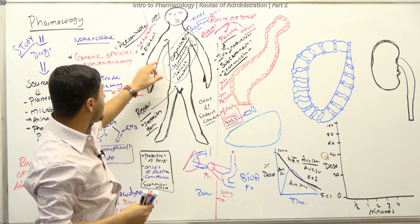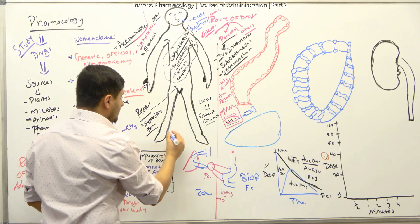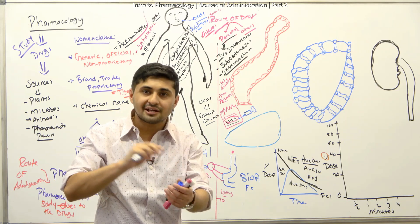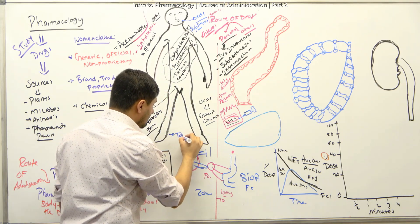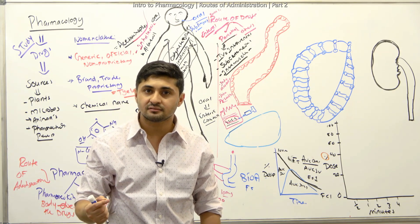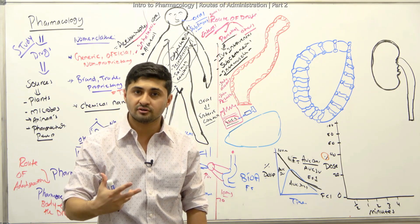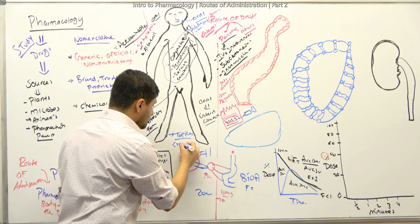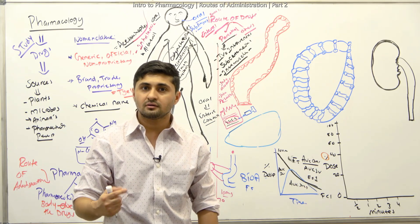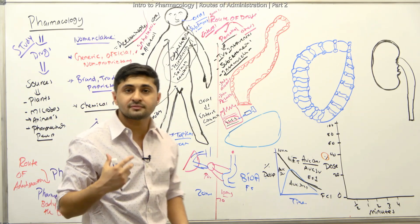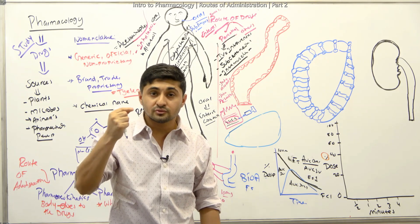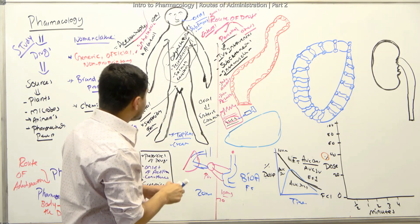Another route is topical creams, which have only a local effect. For example, if you have athlete's foot from a fungal infection like tinea pedis, you give an antifungal cream. Or for conditions like eczema or psoriasis, you apply anti-inflammatory topical medication. Eye drops are also considered topical, since they have a local effect at the site of application.